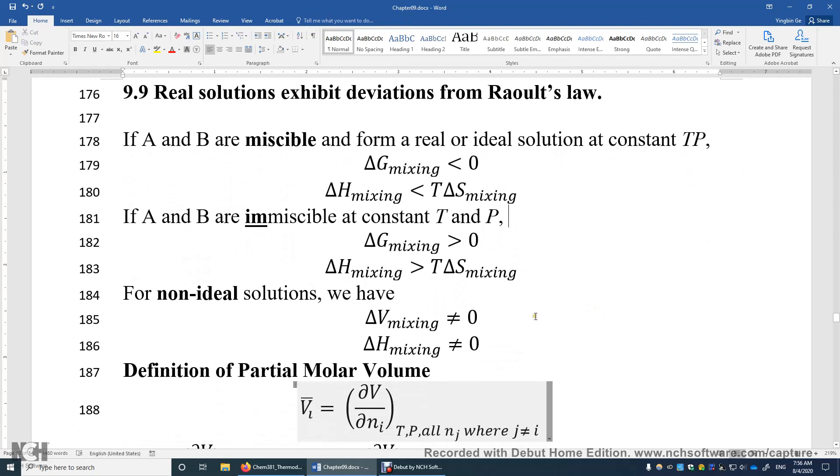For non-ideal solutions, we can tell this delta V mixing is different from zero. When you mix water and ethanol, the volume decreases. And also, this delta H mixing is non-zero. It can be positive, it can be negative. Delta U mixing also can be positive or negative.